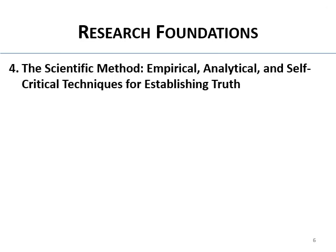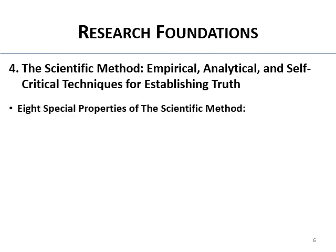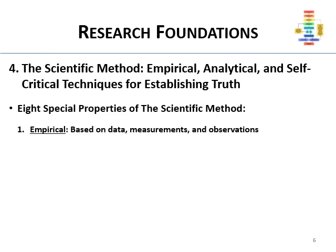Here's the one I've got to pump up this lecture: the scientific method. Psychology is a science, and the scientific method is the method we use to establish truth in psychology. It is a method of empirical, analytical, and self-critical techniques for establishing truth. There are eight special properties of the scientific method. First, it's empirical — based on collected data, measurements, and observations. It's analytical — we study very complex things in psychology.